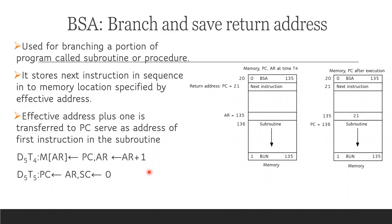For BSA — Branch and Save Return Address (D5): this implements a subroutine call. For example, if we have an instruction at address 20 with BSA 135 (direct address), the program counter is currently 20, so it automatically increments to 21. Address 21 is the next instruction, and this becomes the return address.